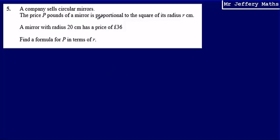So taking this part of the sentence, that P is proportional to the square of r, what we can say is that P is equal to k multiplied by the radius squared, where k is just a constant, and we are going to find out what that is.